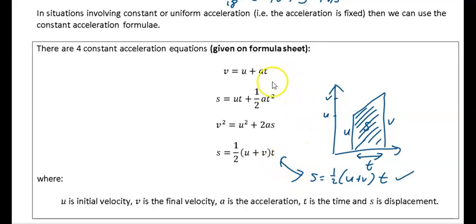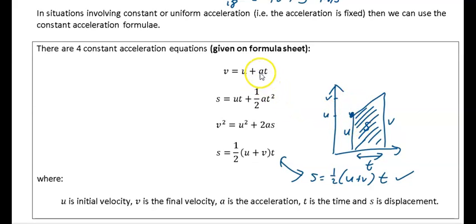Let's also look at v = u + at. If your initial velocity is u and your acceleration is a, then every second your velocity increases by a meters per second squared. So in t seconds it increases by at, and your final velocity is u + at.